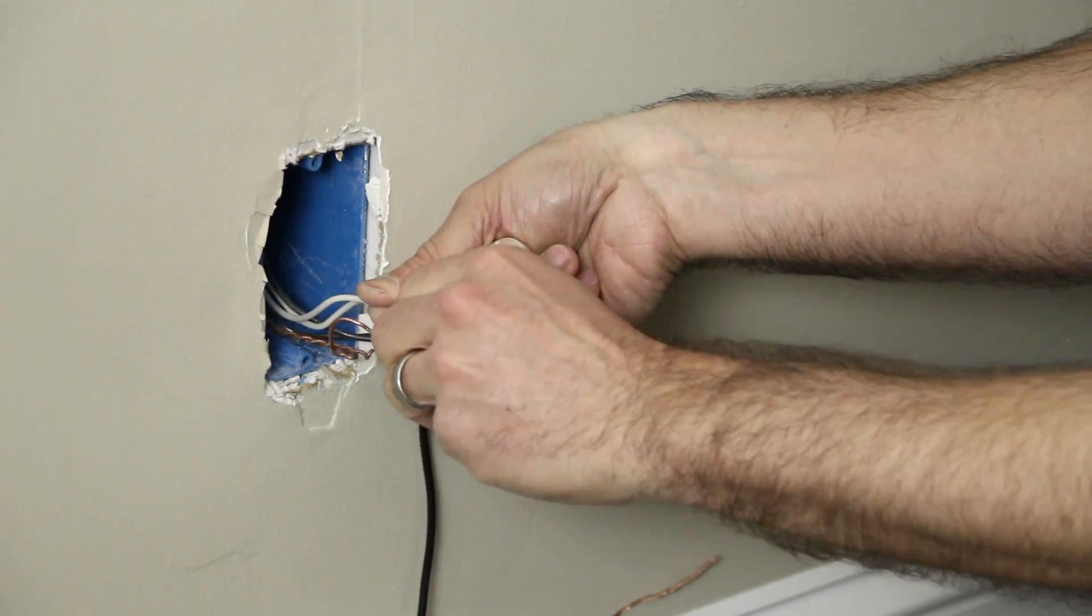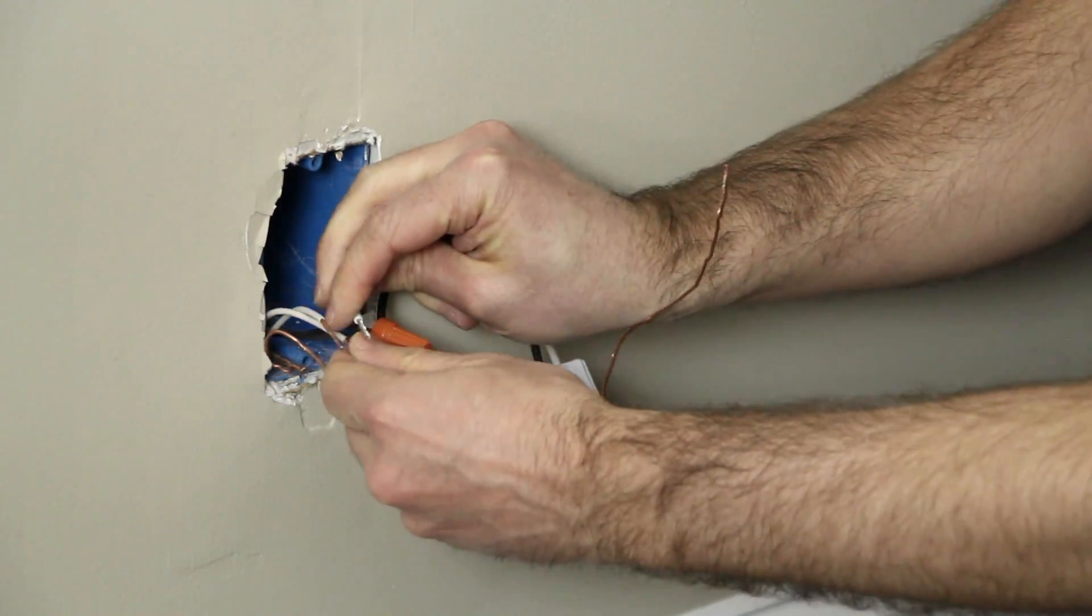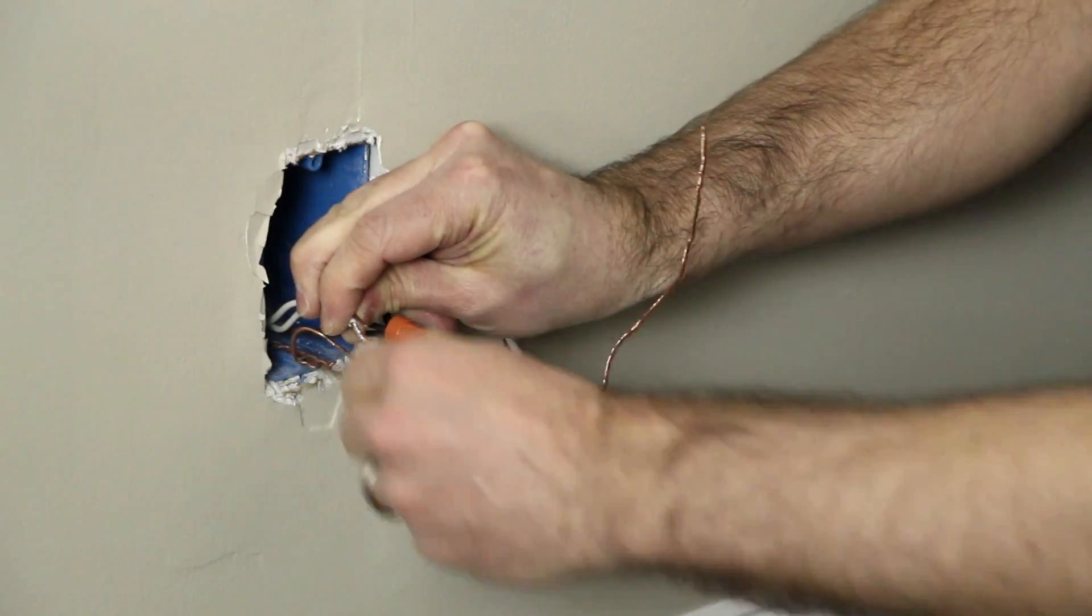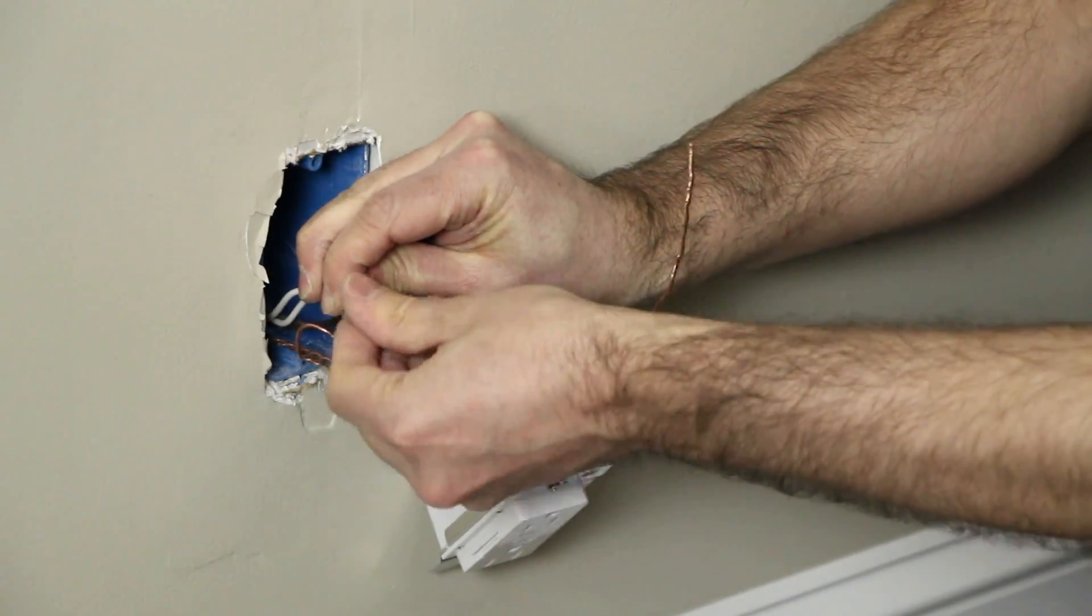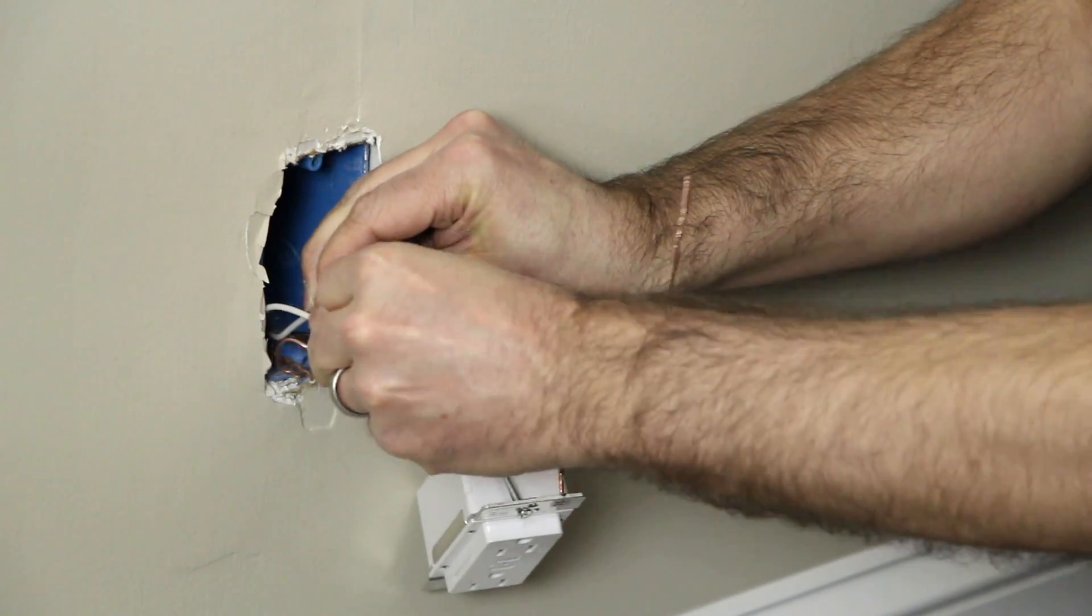Next, connect the white wire on the iDevices Wall Outlet to the neutral wires, which are usually white, with the provided wire nuts. If there are multiple white wires, cap them all together.